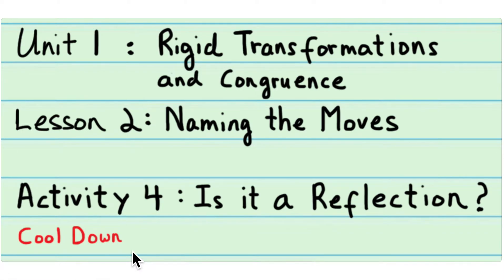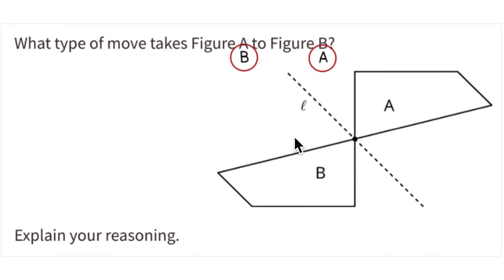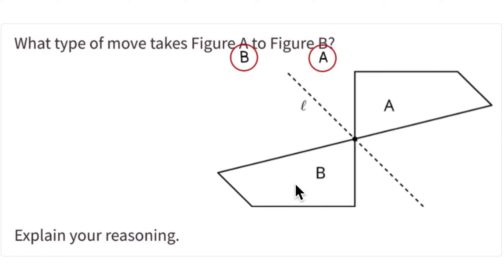This is activity four — 'Is it a Reflection?' — the cooldown for lesson two, which is 'Naming the Moves' from unit one, Rigid Transformations and Congruence. They give you a figure and ask what type of move takes figure A to figure B. I made a mistake as I went through this — I started looking at figure B and moving figure B to figure A, but it's just the reverse direction, so it doesn't change the answer.